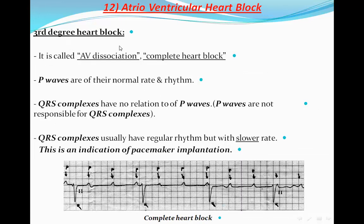Third degree heart block is a type of AV dissociation and can be called complete heart block. We will find P waves in the ECG with a normal rate and equal P-to-P interval. These arrows point to the P waves — they are regular and at a normal rate. Calculating the big boxes, it is almost four, giving a P wave rate of about 75 per minute. However, the QRS complexes, although regular, are very slow — about 10 big boxes — so the QRS rate is about 30 per minute. There is no fixed PR interval.